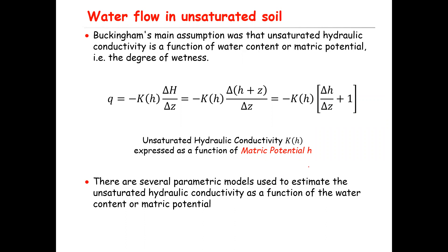As you know, matric potential and water content are related. The less the water content, the more negative the matric potential. So here, flow Q through the unsaturated porous medium is equal to minus K(H) times delta H over delta Z, where K(H) is the unsaturated hydraulic conductivity and delta H over delta Z is the hydraulic gradient.